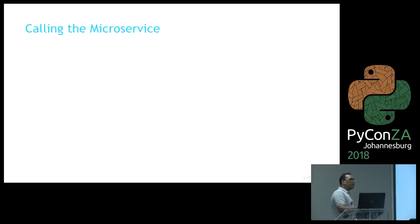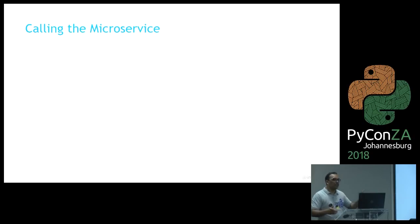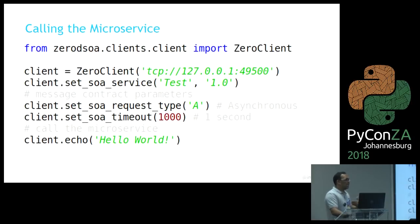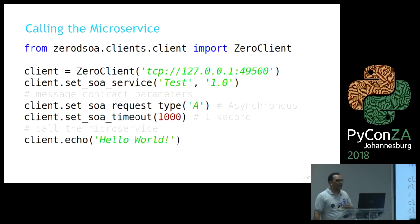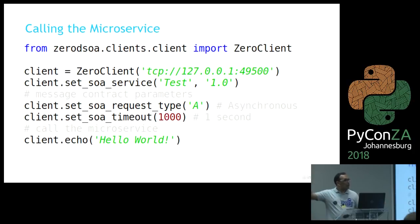There are essentially two ways to call a microservice. The more common way we use within our environment is a ZeroClient — a client API. You instantiate your ZeroClient, set the service using the service signature, and you can also set contract parameters like the request type — we support both synchronous and asynchronous requests, so you can fire and forget. You can set things like timeout, and then immediately call it like you would normally call a method on a normal object. The fact that that object is on the opposite side of the network — you don't need to care about that. The framework does.